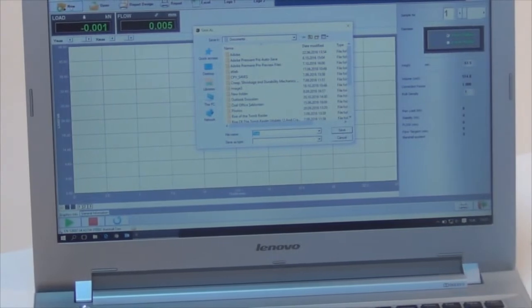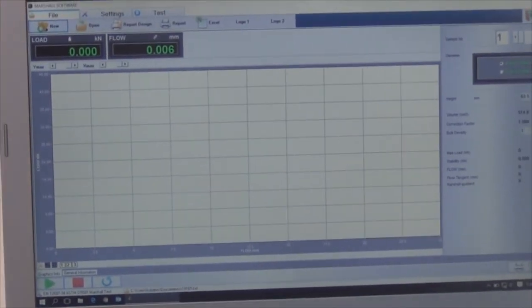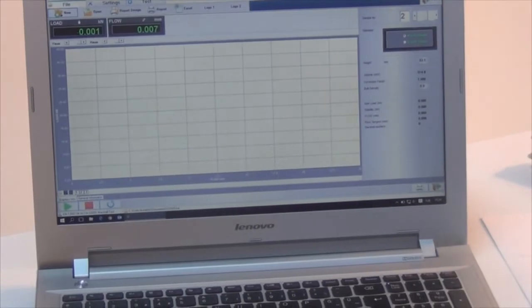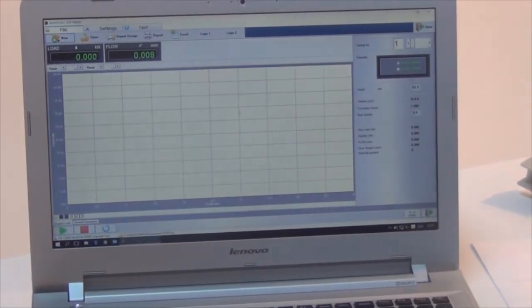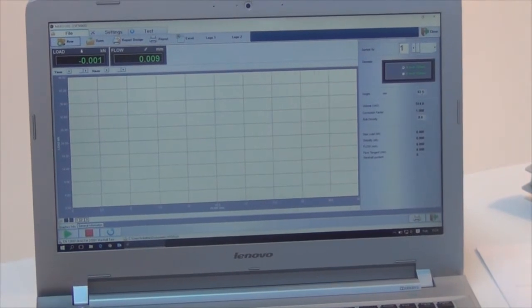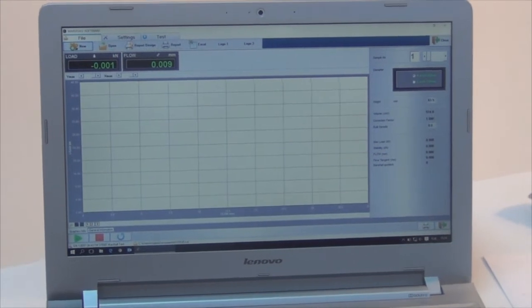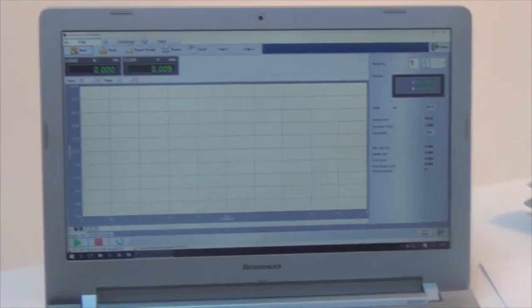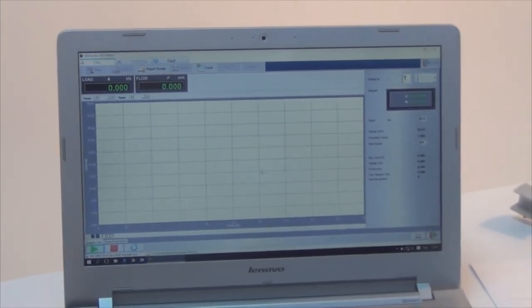You write a name according to the sample you are using. You can make three samples in one program and take the average of the readings. You can write some parameters like the height of the sample and they will be calculated automatically. Just like the other one, you press the play button and the test will start.